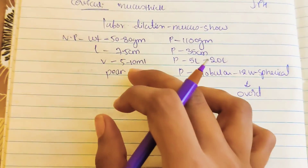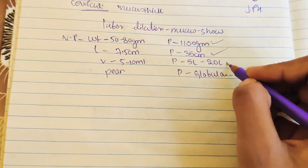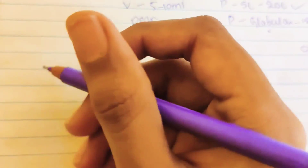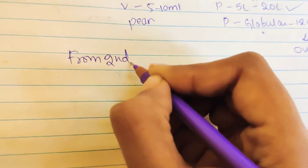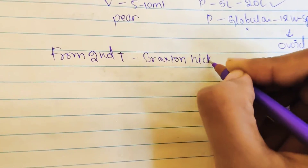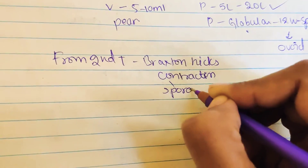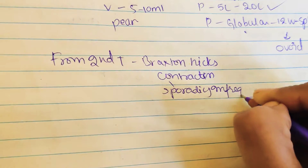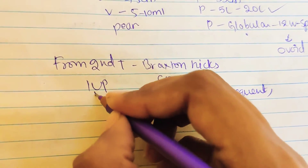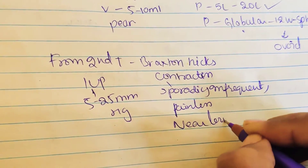To summarize the uterine table: non-pregnant — 50 to 80 grams, 7.5 cm length, 5–10 mL volume, pear-shaped; pregnant — 1100 grams, 35 cm length, 5–20 liters volume, globular then spherical then ovoid. From the second trimester there is a sign called Braxton Hicks contractions — sporadic, infrequent, and painless contractions. On IUP they show 5 to 25 mmHg, and near term they are called false labor.